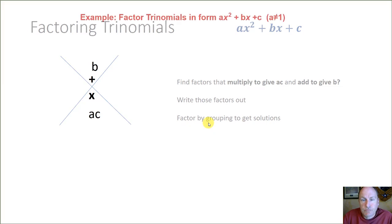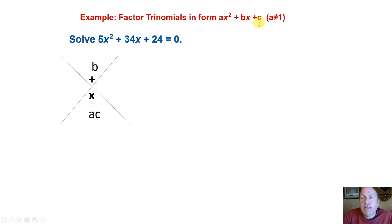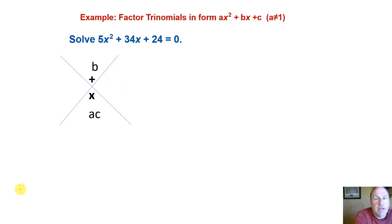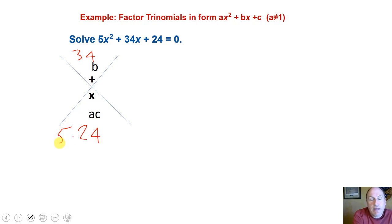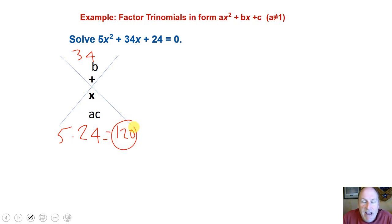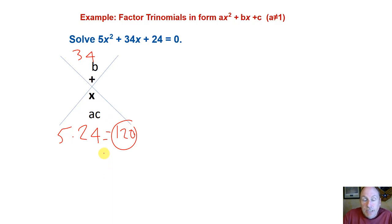Let's look at an example. We're going to factor a trinomial where a is not necessarily equal to 1. Here we have 5x squared plus 34x plus 24 equals 0. Our b term is 34, our c term is 24, and our a term is 5. So we've got to go 5 times 24, which is 120. Unfortunately, 120 has a lot of factors, so our work is cut out for us. The difference from the previous example is that a was 1 there — this is the more general case where a and c can be anything.